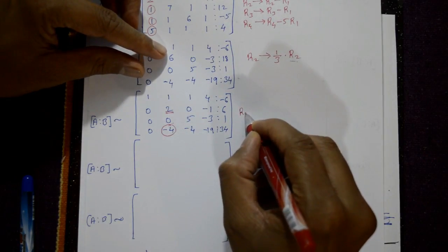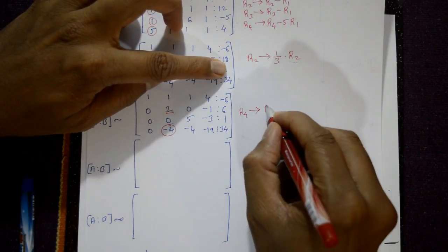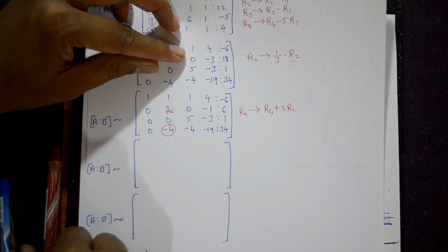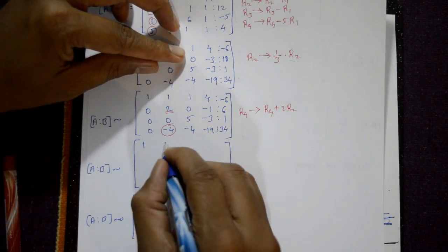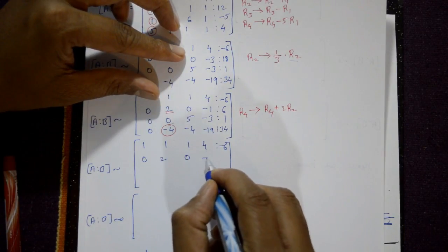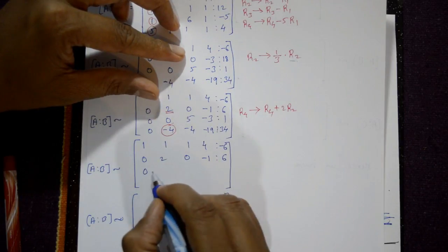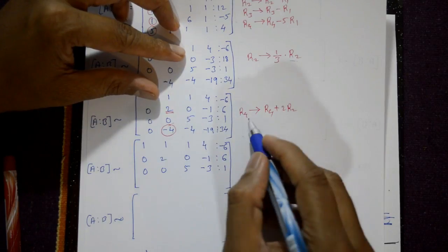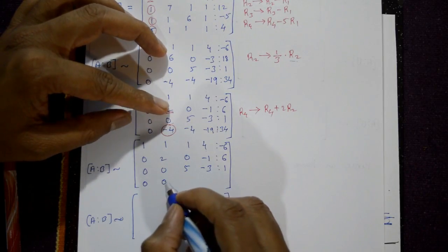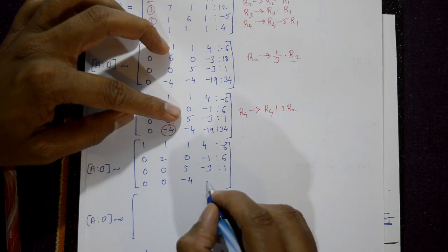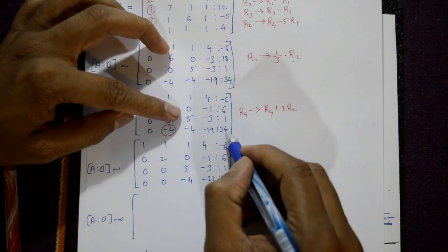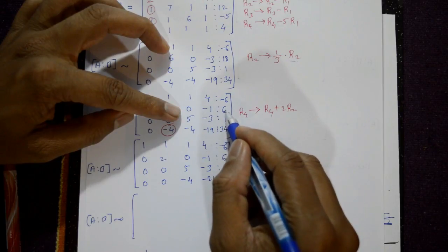To eliminate the -4 in the fourth row, we apply R4 = R4 + 2×R2. The first two rows are unchanged. The fourth row becomes: [0, 0, -4, -21 | 46]. Adding 2 times the second row gives 2×(-1) = -2 for column 4, and 2×6 = 12, so 34 + 12 = 46.